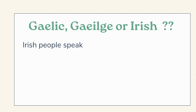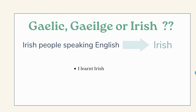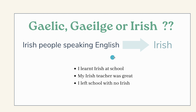So when Irish people are speaking English, we call the Irish language 'Irish.' Some examples of what we would say: we would say 'I learned Irish at school,' or more likely 'I didn't learn Irish at school.' 'My Irish teacher was great' — and if an Irish person says that, they're not referring to the teacher being from Ireland; we're usually referring to the teacher that taught us the Irish language. Or 'I left school with no Irish' — this is a very common thing Irish people say, referring to the Irish language.